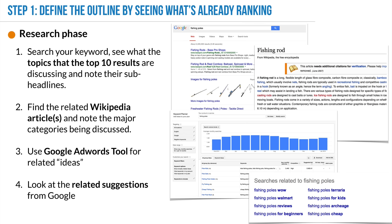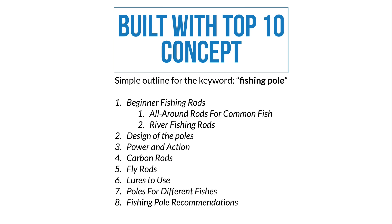Another tool I use is Google AdWords. Using the default settings and the 'Ideas' feature, you put in your keyword and it gives you related ideas grouped by different categories. Last but not least, at the bottom of the Google search page there are related suggestions. For instance, Google might suggest 'fishing poles for beginners,' which tells you Google expects to find content about beginners, advanced, and different skill levels within that article.